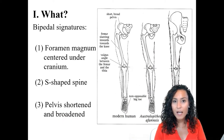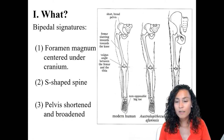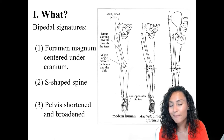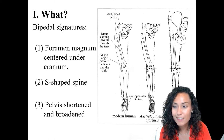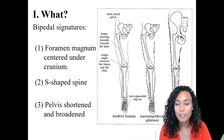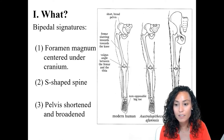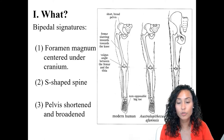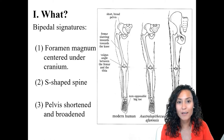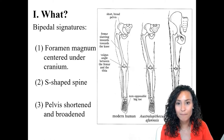Another core feature that differs between apes and humans is the length and width of the pelvis. In anatomically modern humans, the pelvis is shortened and broadened, which helps with balance and creates a wider birthing canal for women.